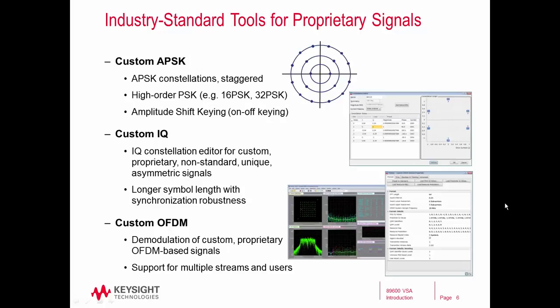In all of these cases, you're able to define your signal constellation and then in the VSA software get results for constellation diagram and error vector magnitude. You're able to look at your EVM versus symbol or versus subcarrier for OFDM signals. So a lot of results and flexibility are provided for these custom signals.